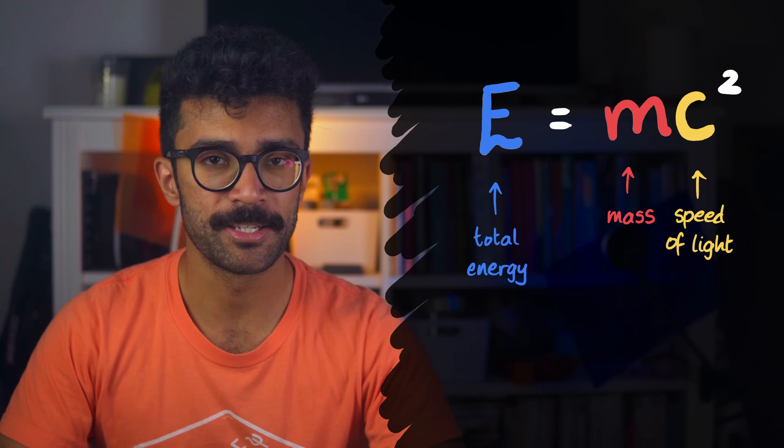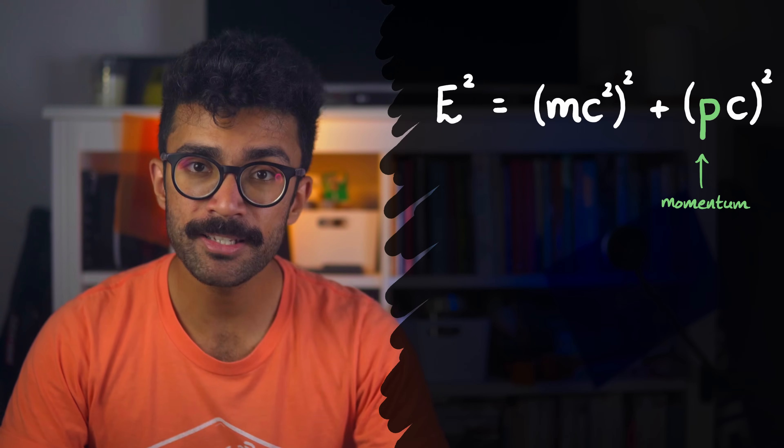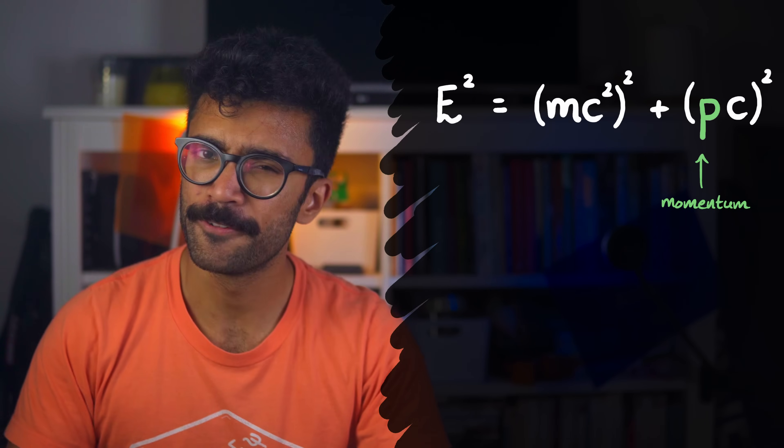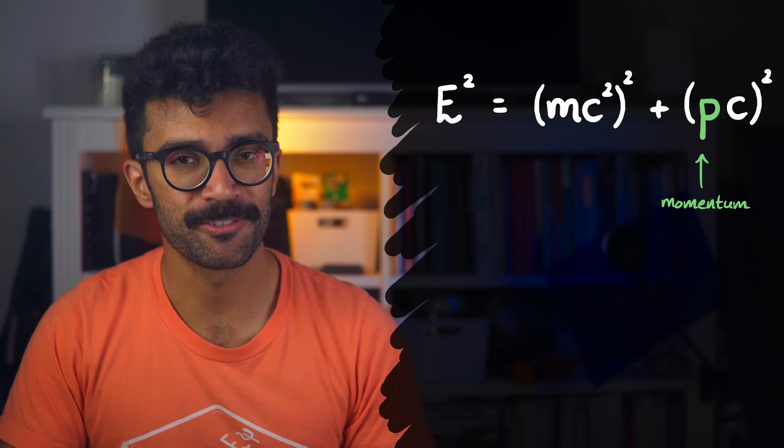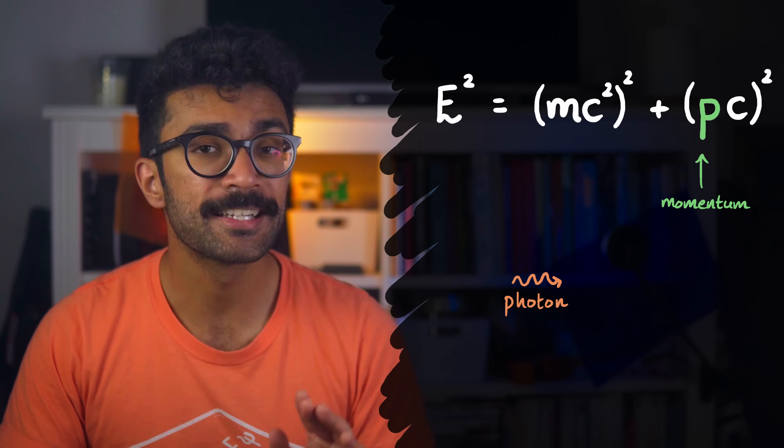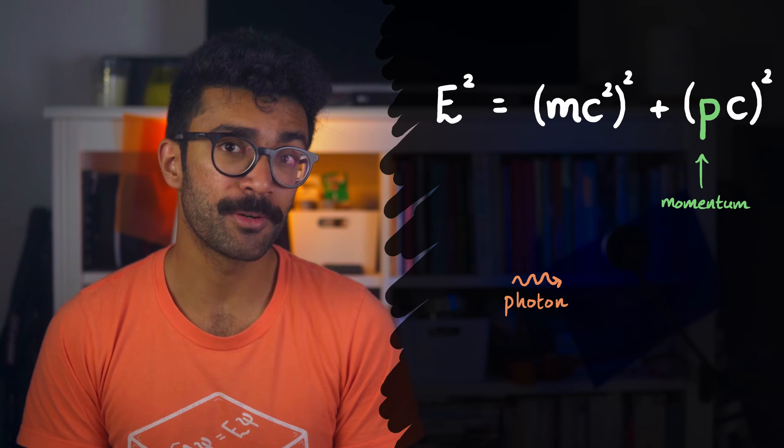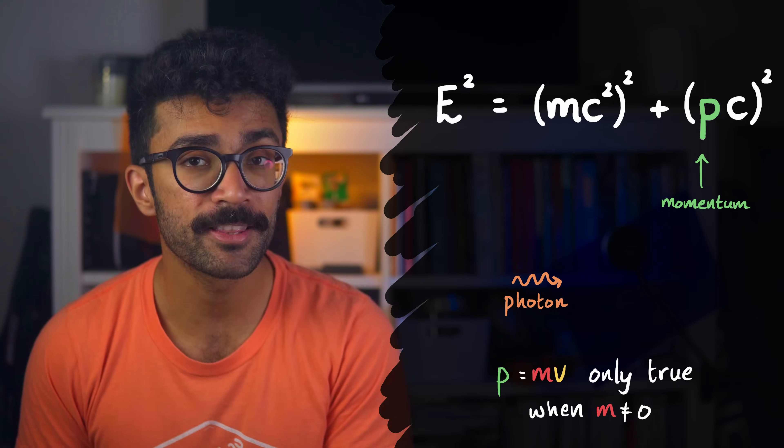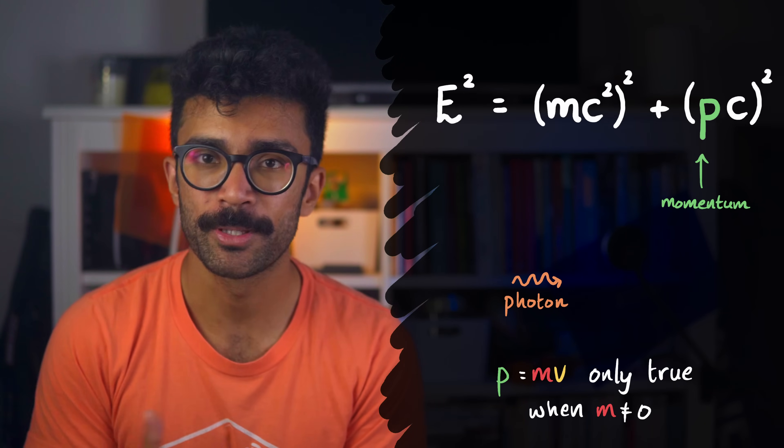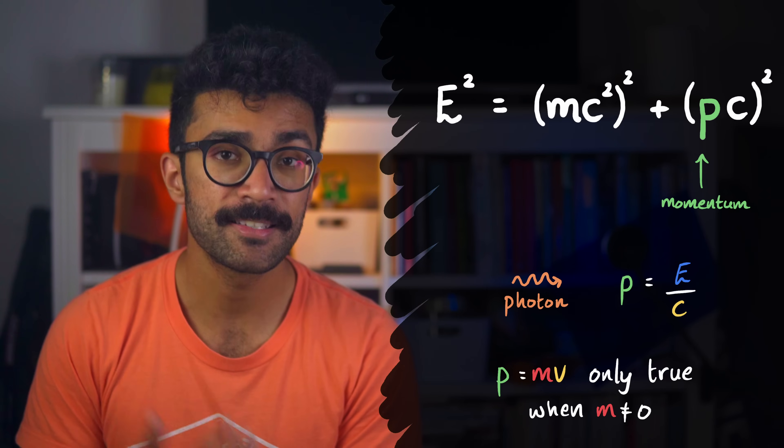The full version of this equation actually looks like this. It incorporates the object's momentum, which it will have if it's moving, if it's an object with mass, of course, right? Well, interestingly, even photons, particles of light, which have no mass, can still carry momentum. So, in other words, the momentum equation that we're taught in high school, p is equal to mv, only works for things with mass. For photons without mass, the momentum is given by their energy, e, divided by the speed of light, c.